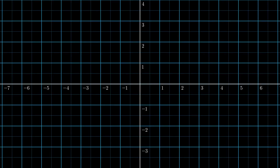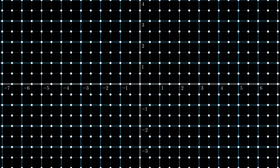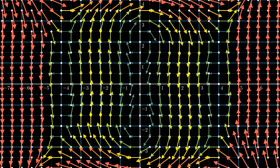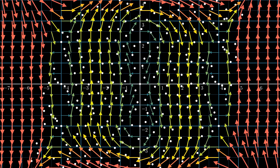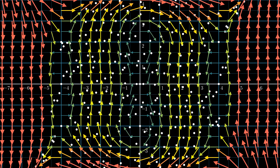Let's start with a vector field. With each point in space we associate a vector, so magnitude and direction. Now if we place something in the field, it will move along with the vectors of the field.